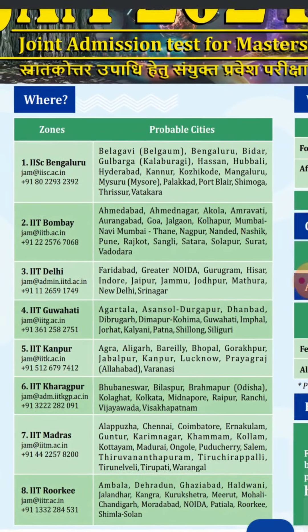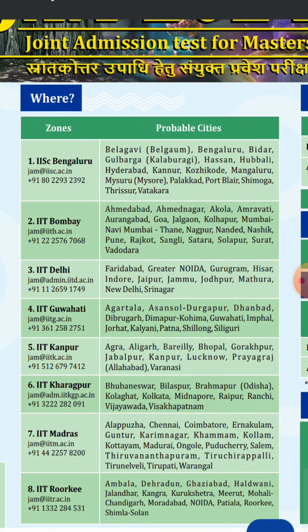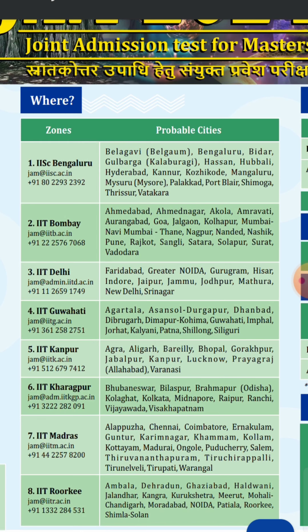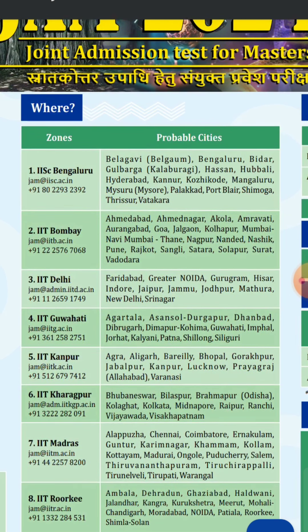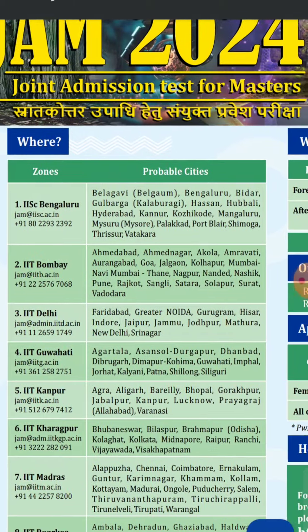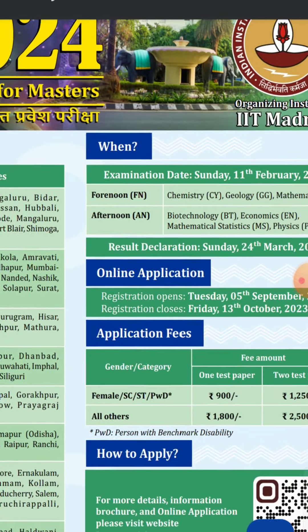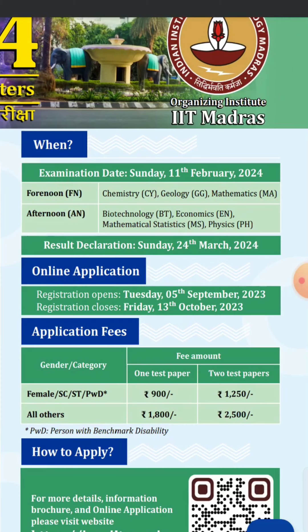There are different examination zones with probable cities: Bangalore, Bombay, Delhi, Guwahati, Kanpur, Kharagpur, Madras, and Roorkee. Under IIT Bombay's zone specifically, the probable cities include Ahmedabad, Ahmednagar, Akola, Amravati, Aurangabad, Goa, Jalgaon, Kolhapur, Mumbai, Navi Mumbai, Thane, Nagpur, Nanded, Nashik, Pune, Rajkot, Sangli, Satara, Solapur, and Vadodara.